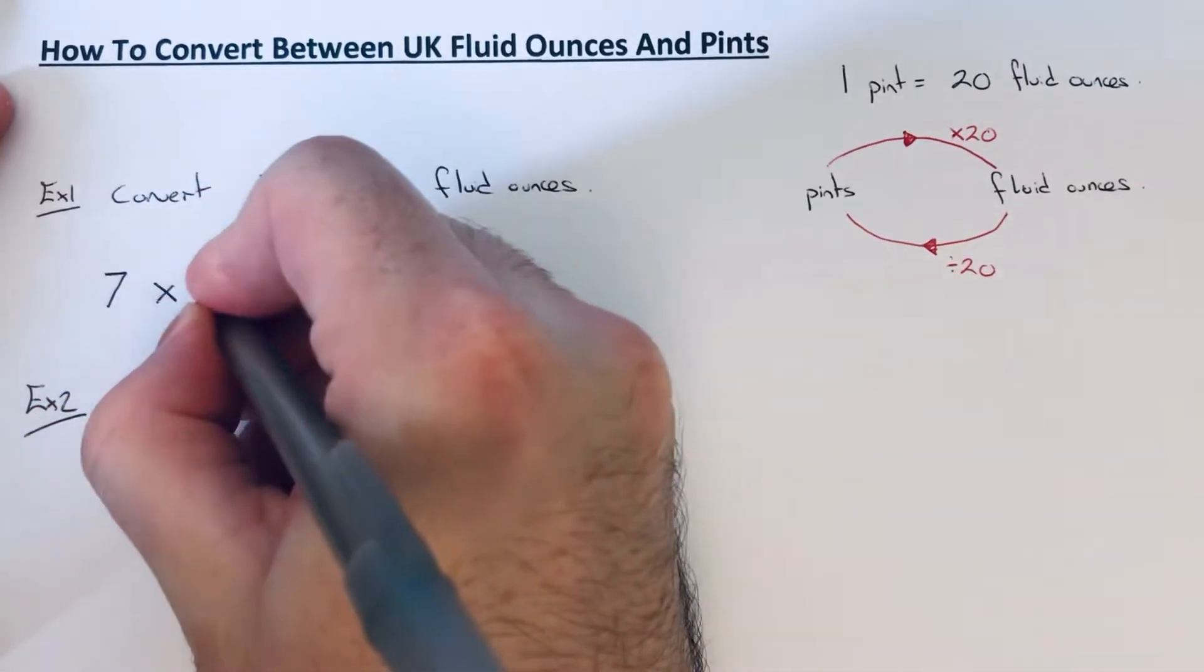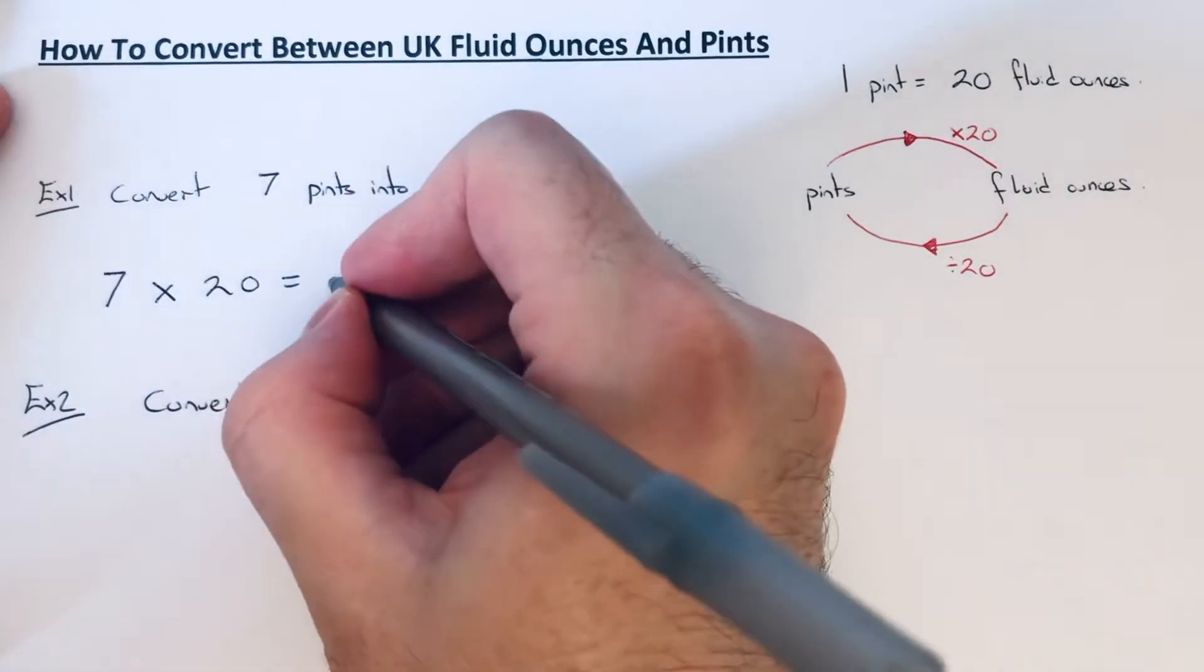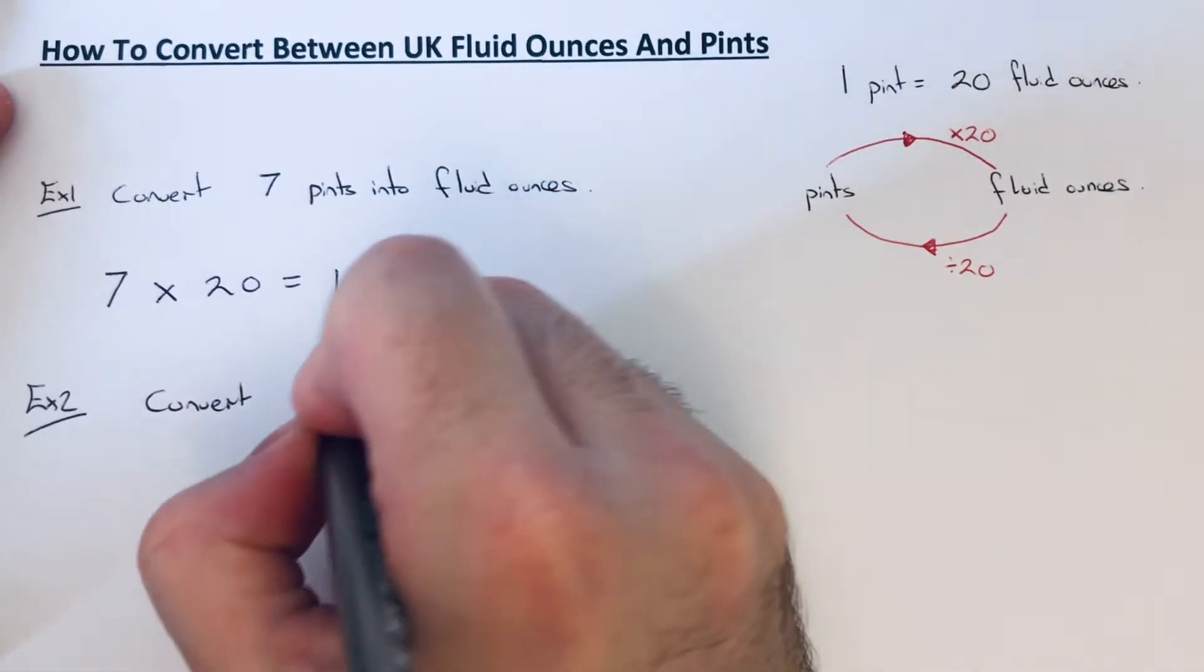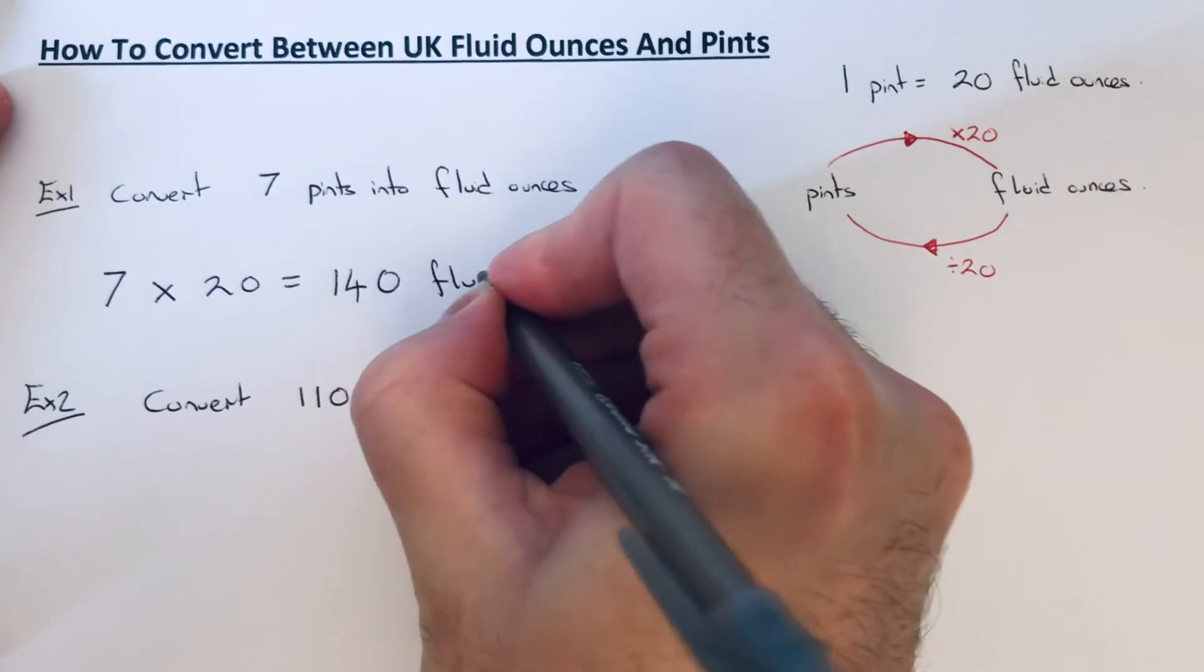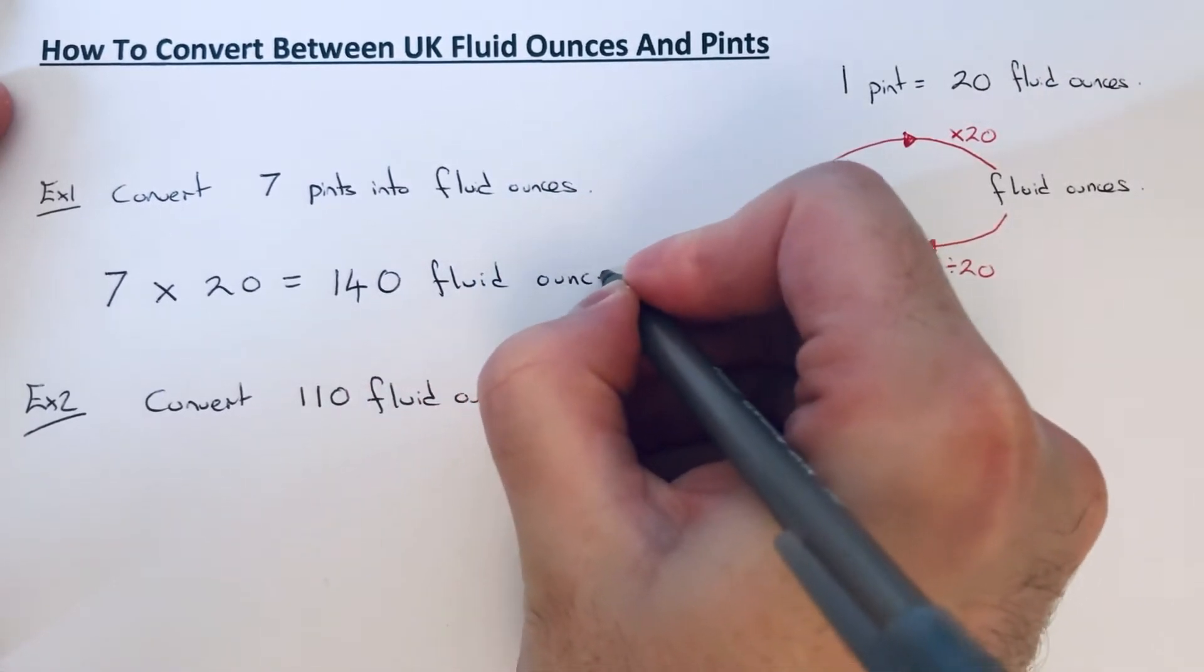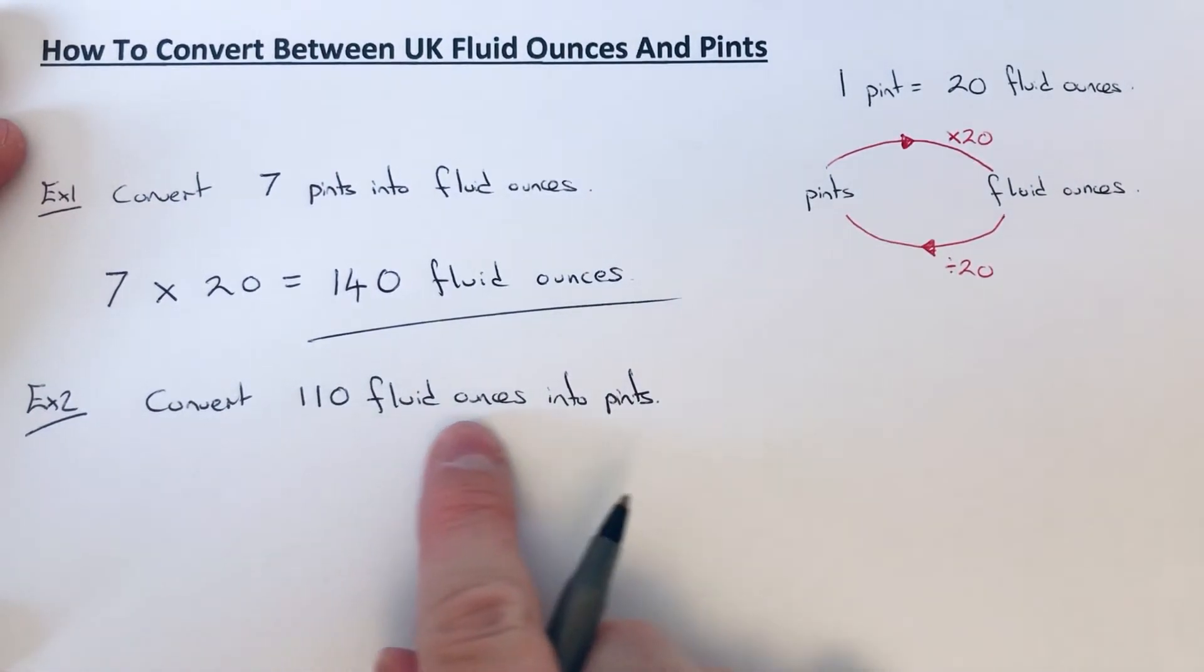We've got to times that by 20. So seven times two is 14, plus the zero gives us 140 fluid ounces. Let's have a look at the second example. We've got to convert 110 fluid